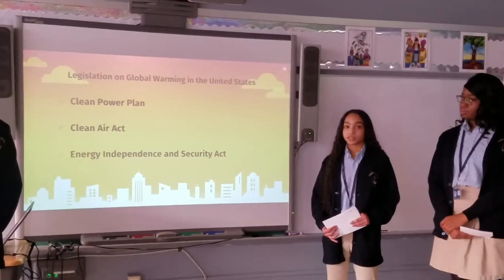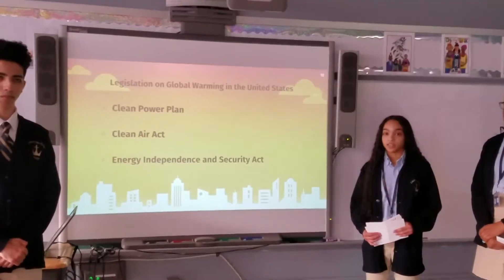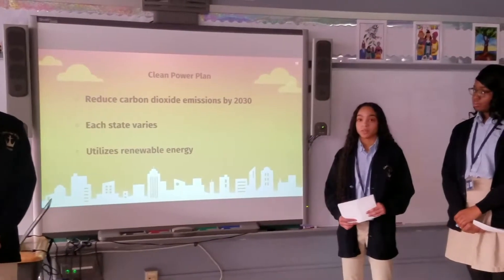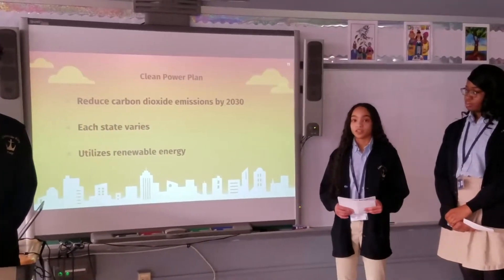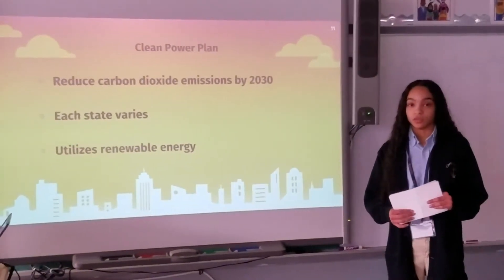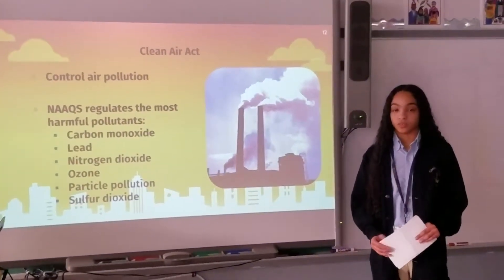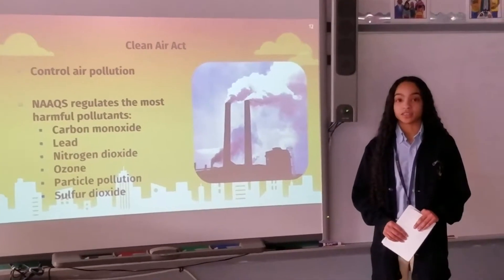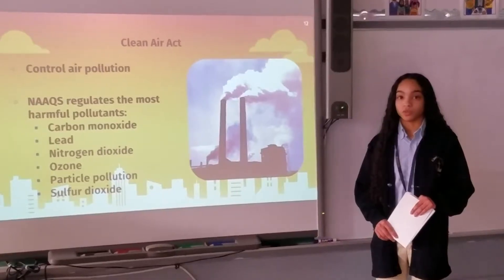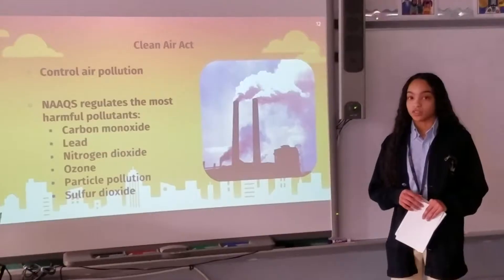I will go in-depth on three laws that the EPA enforced: the Clean Power Plan, the Clean Air Act, and the Energy Independence and Security Act. The Clean Power Plan aims to reduce carbon emissions by 2030; each state varies on how they can achieve this goal, and this plan also utilizes renewable energy to reduce CO2 emissions. The Clean Air Act aims to control air pollution — the EPA has established the National Ambient Air Quality Standards to regulate the most harmful emissions, and each pollutant has its own regulations and standards.